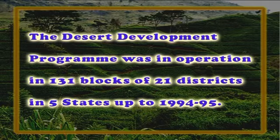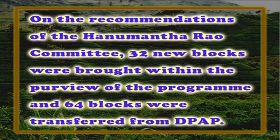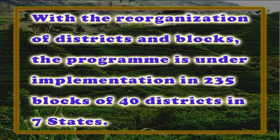The Desert Development Program was in operation in 131 blocks of 21 districts in 5 states up to 1994-95. On the recommendations of the Anumanthrao Committee, 32 new blocks were brought within the purview of the program and 64 blocks were transferred from DPAP. Consequently, coverage of the program was extended to 227 blocks with effect from January 1995. With the reorganization of districts and blocks, the program is under implementation in 235 blocks of 40 districts in 7 states.